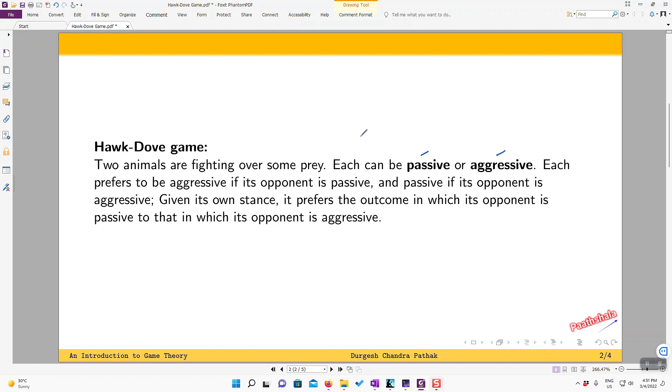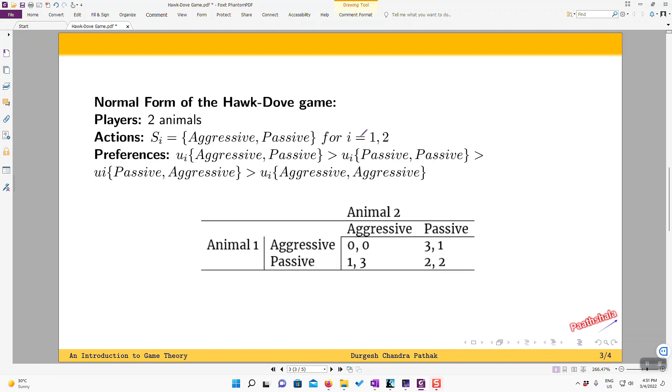So first, let's start with writing the normal form and then we will understand the game better. So players: there are two players, two animals. Actions available to them, so this is the set of strategies. This includes aggressive and passive. And these are two actions, and for the two players both the actions are same.